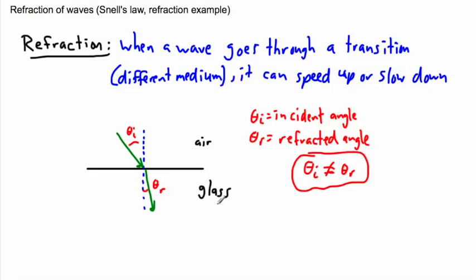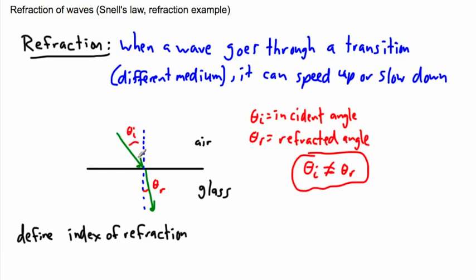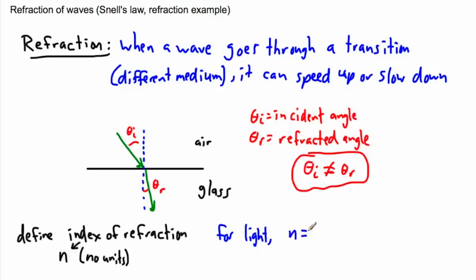What we first have to do is define something really important: the index of refraction. It tells you about the speed of light in one material compared to the speed of light in a vacuum. The index of refraction is called n and has no units. For light, n equals c over v — that's an equation we need to know.